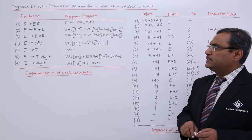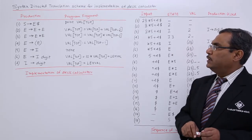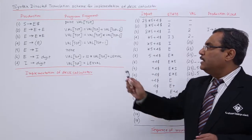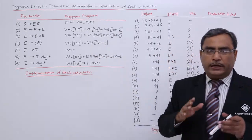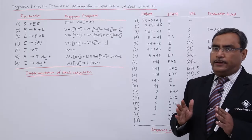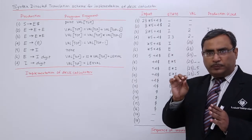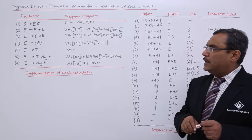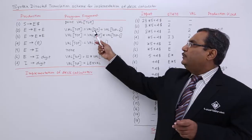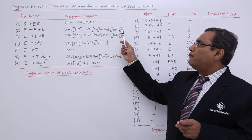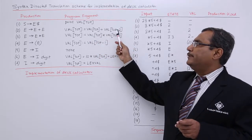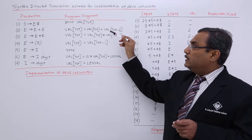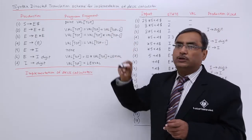S produces E dollar — that is the production — and the corresponding semantic action is print val[top], so we shall be using a stack and the topmost value of the stack will get printed. E produces E plus E: it will add val[top] and val[top minus 2]; these two locations' content will be added, popped out, and the value produced will be pushed on the top of the stack.